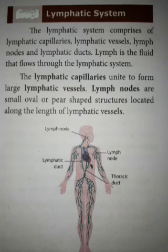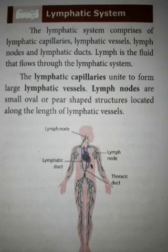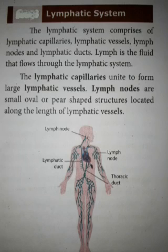Lymphatic vessels lead to lymph nodes, which are small oval or pear-shaped structures located along the length of the lymphatic vessels. The lymph nodes contain WBC cells that help drain foreign particles from the lymph.